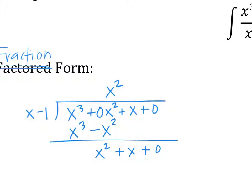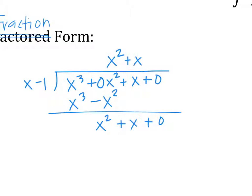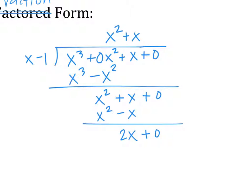Highest degree goes into highest degree. X goes into X squared how many times? X times, so plus X. This is going to be X squared minus X. Subtract down. X squared minus X squared is nothing. X minus minus X is 2X. X, and then plus 0. Last part: X goes into 2X how many times? 2. So put a 2 there. 2X minus 2.